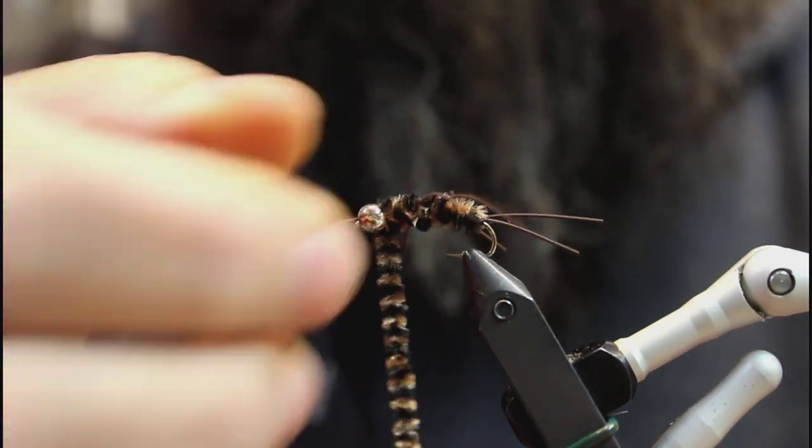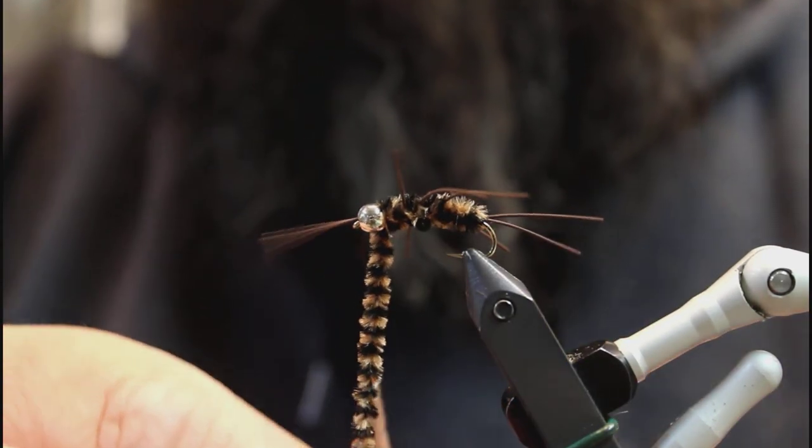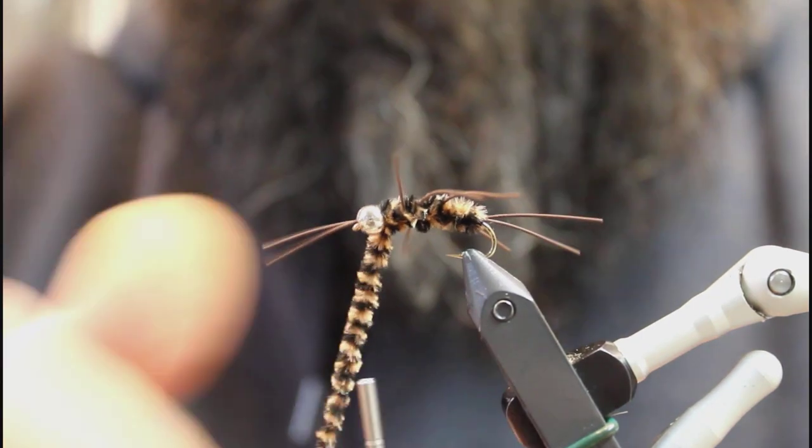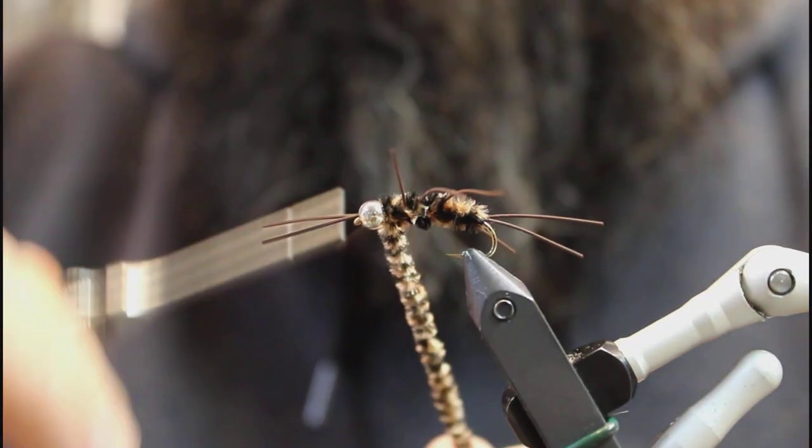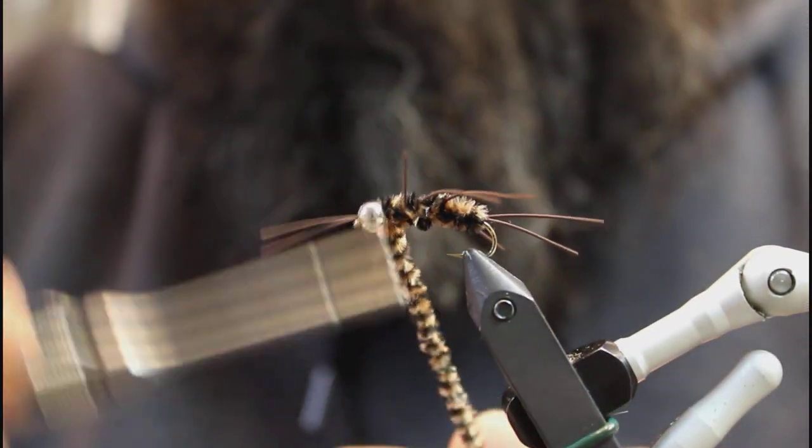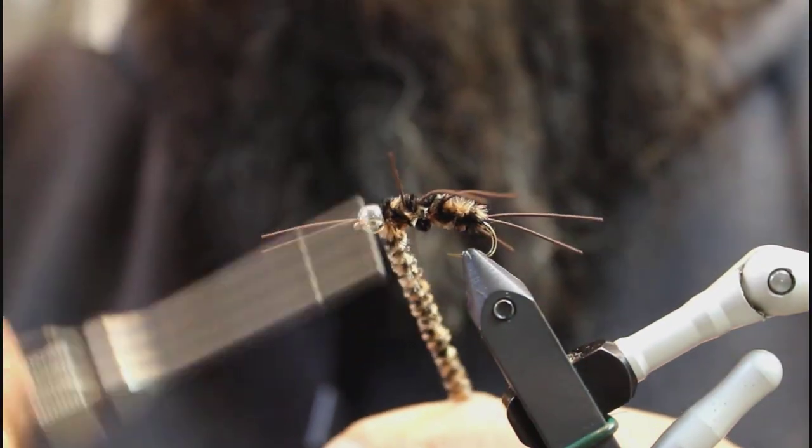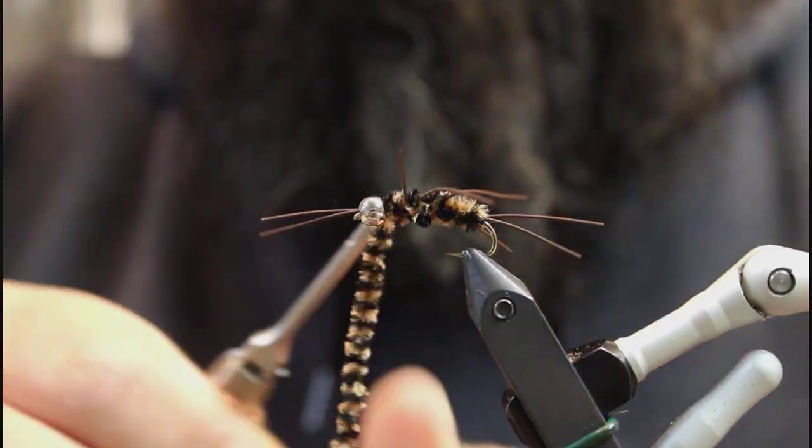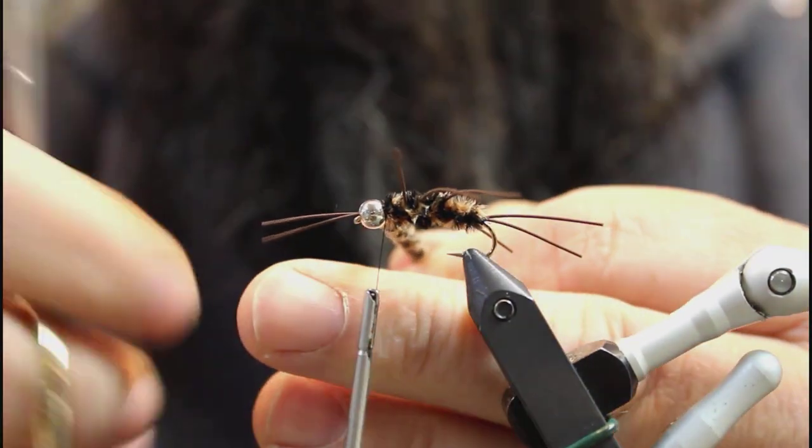We got everything there. Brought our chenille all the way to where our bead is here. We'll just take and capture this chenille in here behind the bead. Don't be scared to put a bunch of wraps on this because usually if this fly does fail, it's there because it doesn't get trapped in there properly. Get a good thread base down there behind that to capture it well.